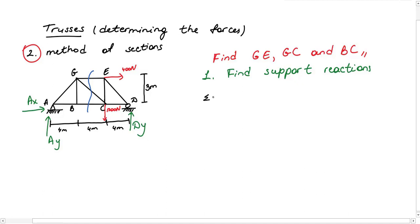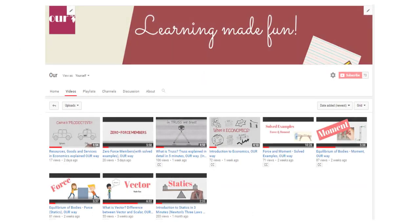If I take moment about point A, this 400 produces clockwise moment so it is negative and it is multiplied by perpendicular distance which is 3. 1200 Newton also produces negative moment about point A, but Dy counterclockwise which makes it positive. After solving this equation I find Dy as 900 Newton.